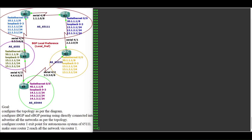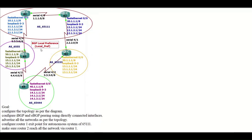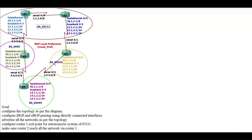Welcome to Internet Works. My name is Edgassi Francis. In this video we are going to see how to configure BGP local preference. You can see we have five routers and four autonomous systems: 65111, 65333, 65444, and 65555.